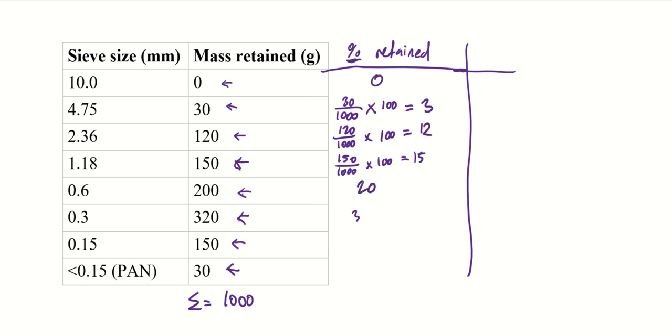So that's 20%, that's 32%, that's 15%. And we stop at 15%, so we don't include the pan in this calculation. So that's the first column.